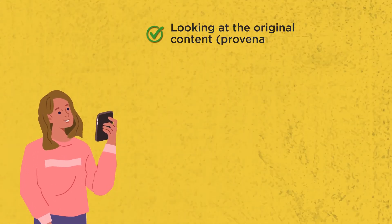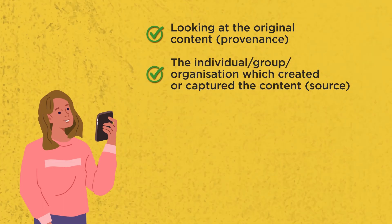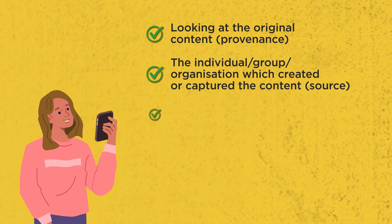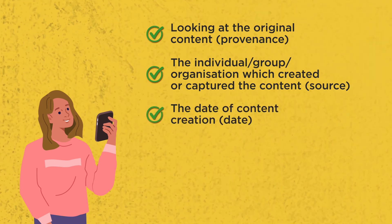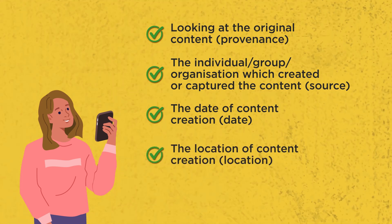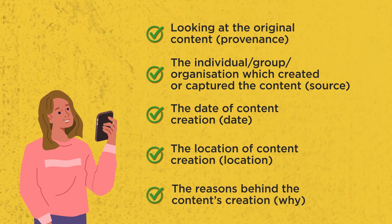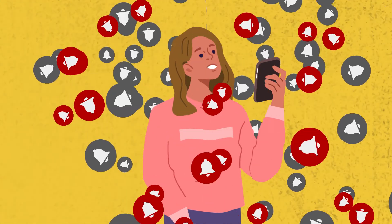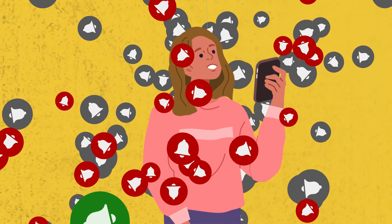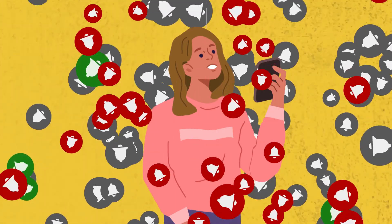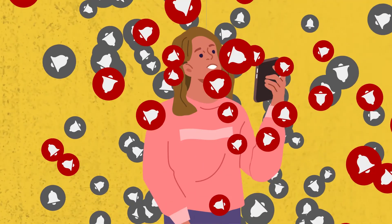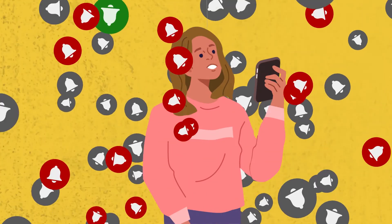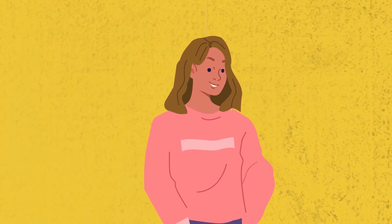Number one, look at the original content. Number two, look at the individual, group, or organization that created or captured the content. Number three, identify the date of content creation. Number four, find out the location of the content creation. Number five, identify the reasons behind the content creation. It's important to note that verification isn't always foolproof and occasionally there's just too much to sift through and you end up falling into an endless rabbit hole. So the rule of thumb is: if you are not sure, do not share.